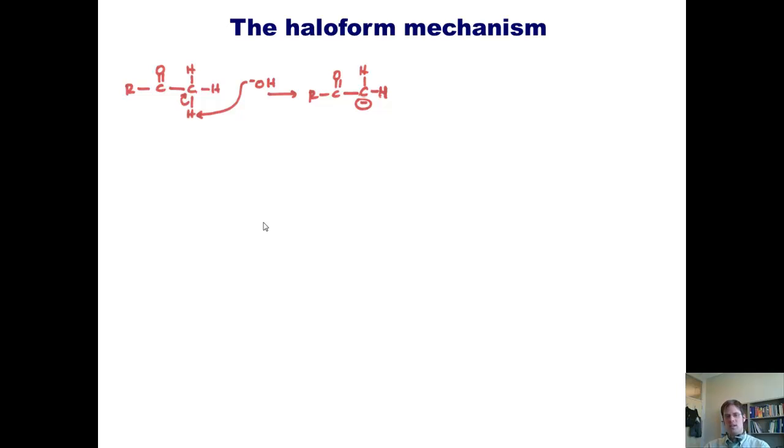At this stage, this enolate will search out our halogen. I've shown chlorine here, but this could also be bromine or iodine. It reaches out, grabs one of those halogen atoms, and kicks off the other as a leaving group to give me a single monochlorinated product here.